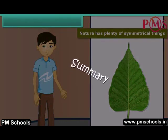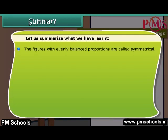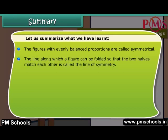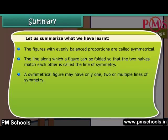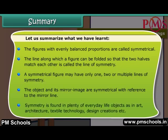Let us summarize what we have learned. Figures with evenly balanced proportions are called symmetrical. The line along which a figure can be folded so that the two halves match each other is called the line of symmetry. A symmetrical figure may have only one, two, or multiple lines of symmetry. The object and its mirror image are symmetrical with reference to the mirror line. Symmetry is found in plenty of everyday life objects, as in art, architecture, textile technology, and design creations.